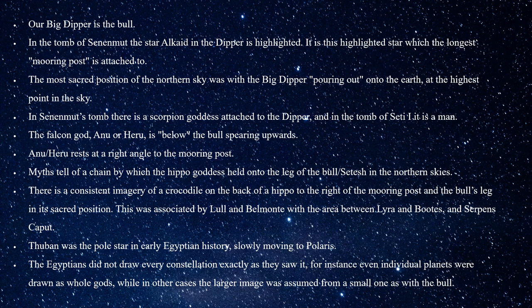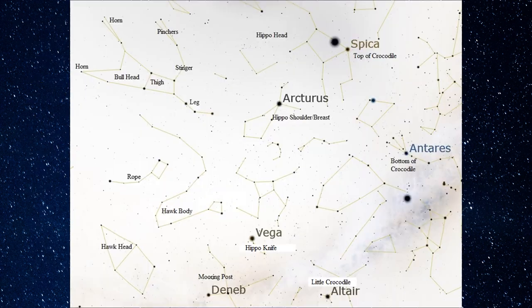There's this consistent imagery of a crocodile on the back of a hippo to the right of the mooring post, with the bull's leg in its sacred position. This has been associated by some with the area between Lyra and Boötes. Thuban was the pole star in early Egyptian history, slowly moving toward Polaris, and during that move it would have gone through a very dark period with no real north star. Finally, the Egyptians did not draw every constellation exactly as they would have seen it — for instance, individual planets could be whole gods, or large images could be extrapolated from smaller ones, such as finding an entire bowl in the image of a bull sled.